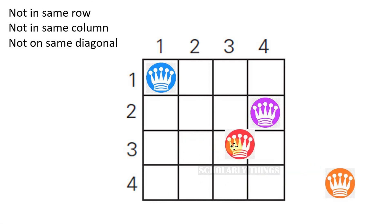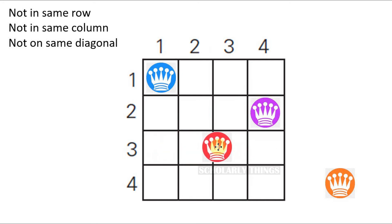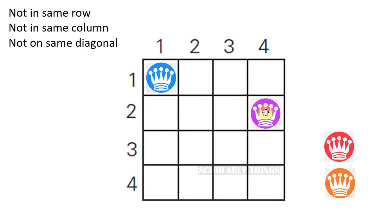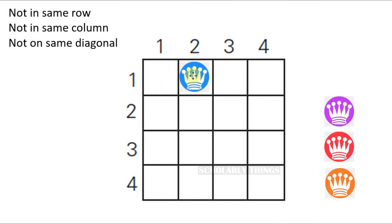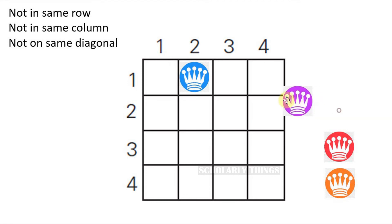When we backtrack to Queen 3, there is no other possible position available either, so backtrack to Queen 2 again. For Queen 2, we have now run out of positions to choose from, so backtrack to Queen 1. The next possible position for Queen 1 is the second column. Continue with Queen 2.